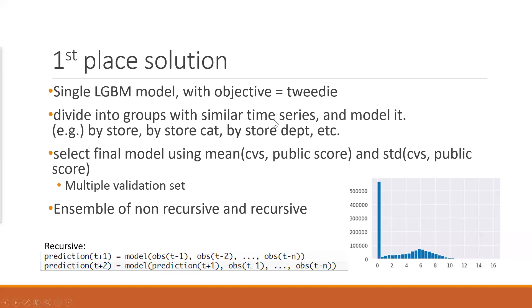If you are forecasting the sales of items, or if you are forecasting the number of claims, for example for insurance claims, where you have lots of zeros in your distribution, the tweedie objective is a good choice. And again, they divide into groups with similar time series and model it. For different stores, for different store categories, they train a different model.